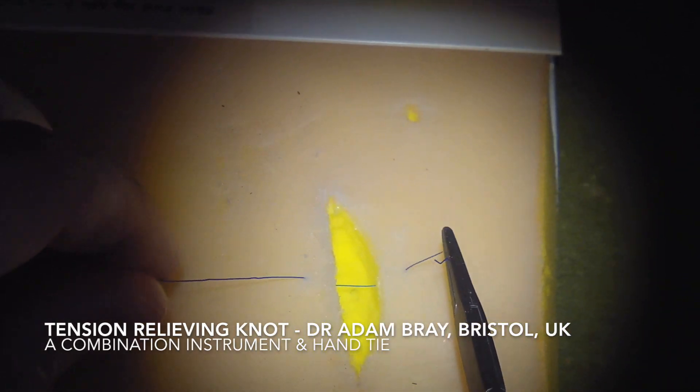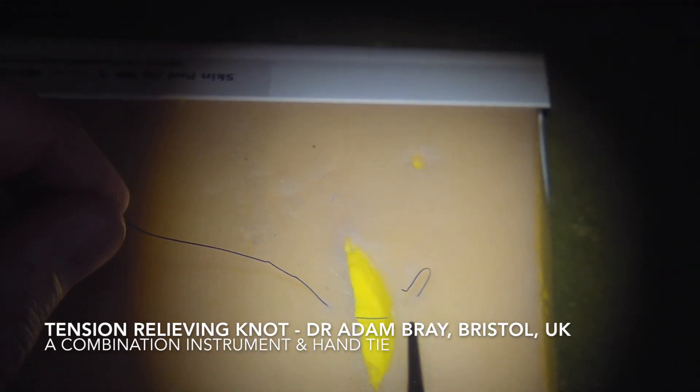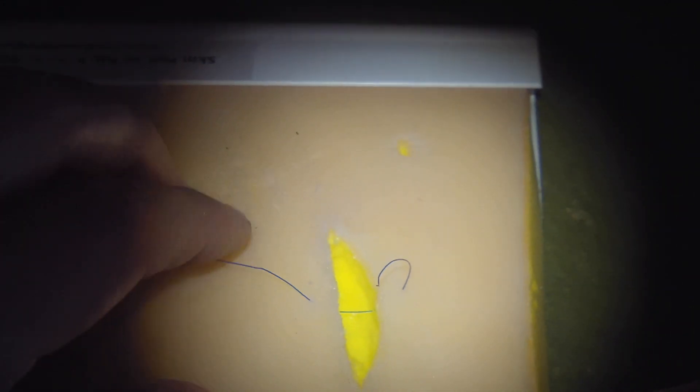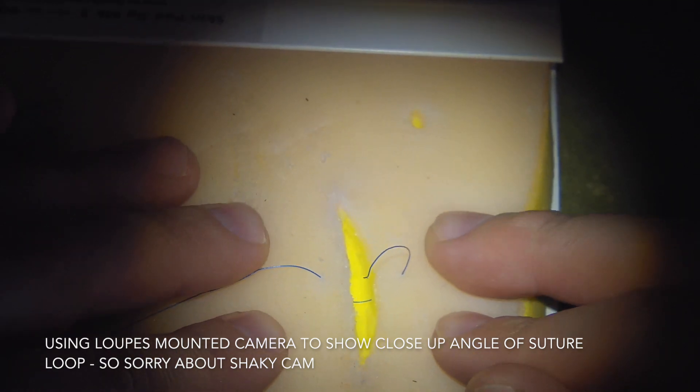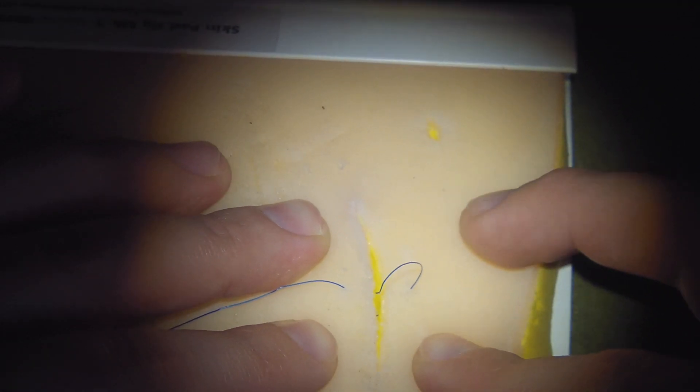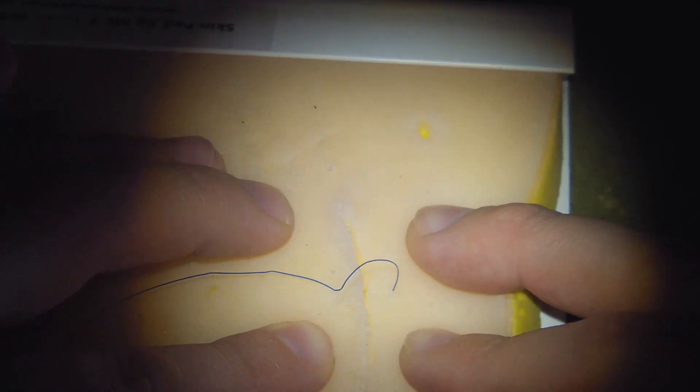I'm going to show you a tension relieving knot. I'm going to show you it with a surface suture, although it would normally be done with a buried suture because we normally use our buried sutures to remove all the tension so that we can do nice fine sutures on the surface and get a good scar.